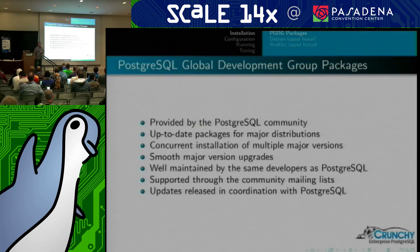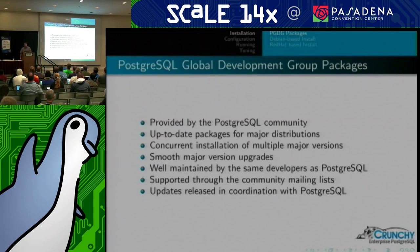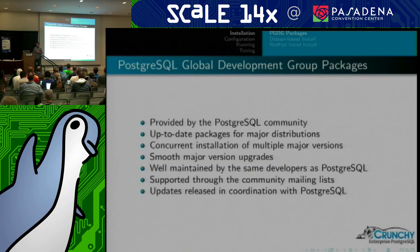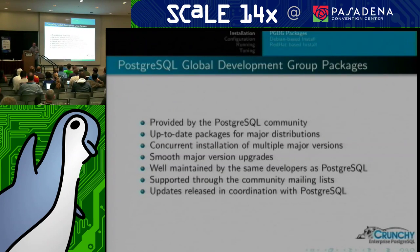The Postgres Development Group provides packages for both Red Hat-based systems as RPMs and Debian-based systems. Both sets of packages allow you to have multiple major versions of Postgres installed concurrently and allow for smooth major version upgrades using the PG Upgrade tool. In all systems I run today, I use everything from the PGDG because those are up-to-date, well-maintained, supported through the community mailing list, and updated in coordination with the Postgres team.